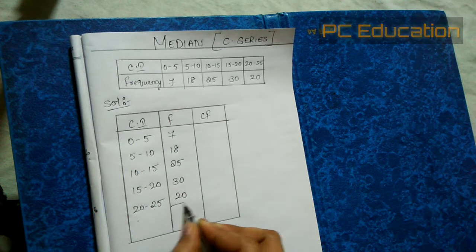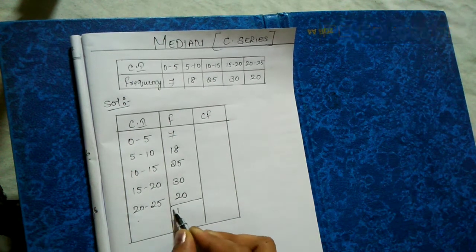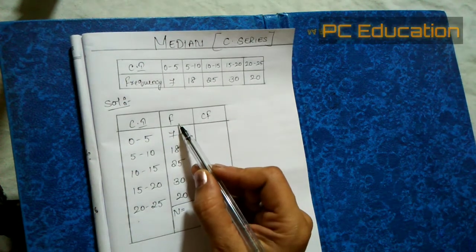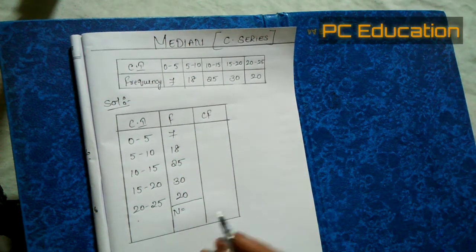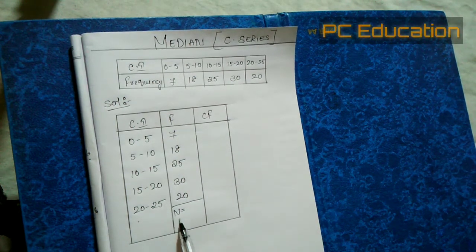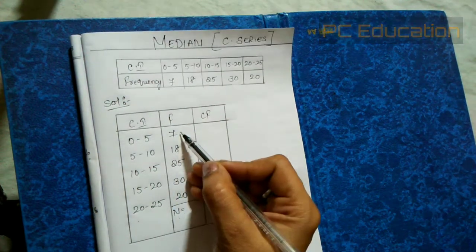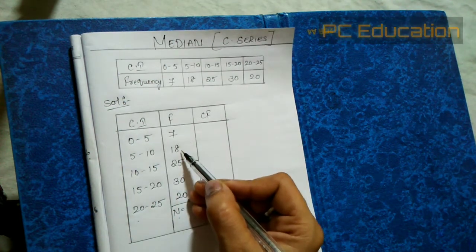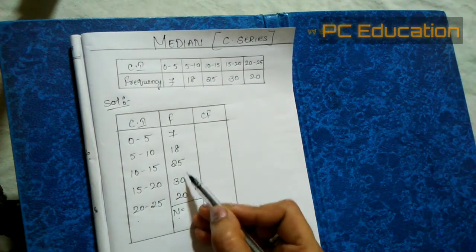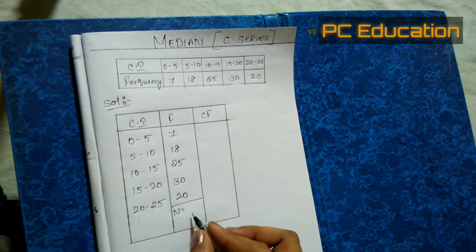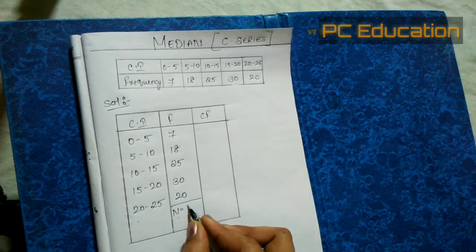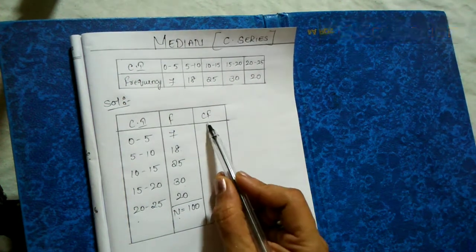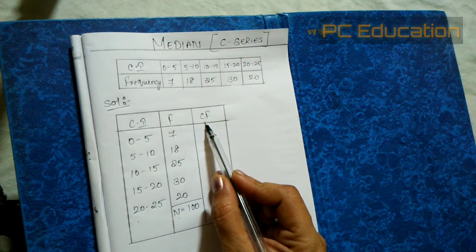First, we need to find N. Whenever frequency is given, we need to find N by adding all the frequencies. So 7 + 18 + 25 + 30 + 20 gives us a total of 100.